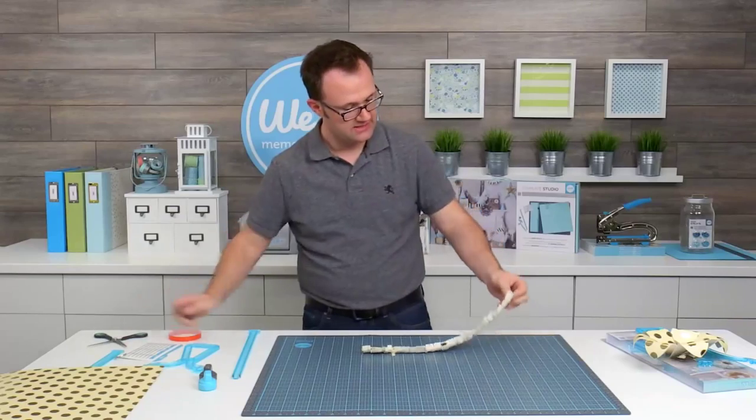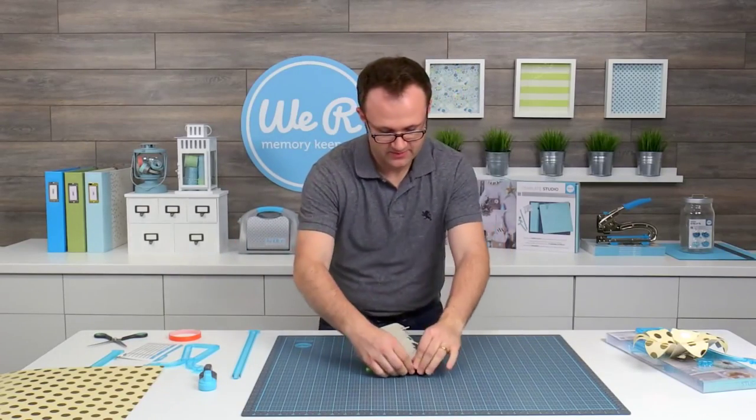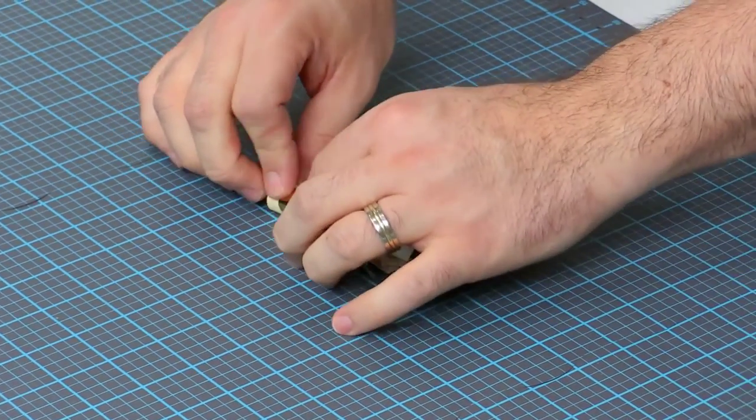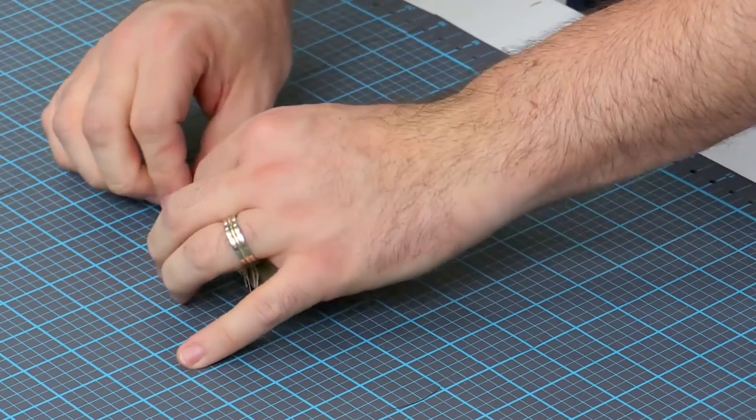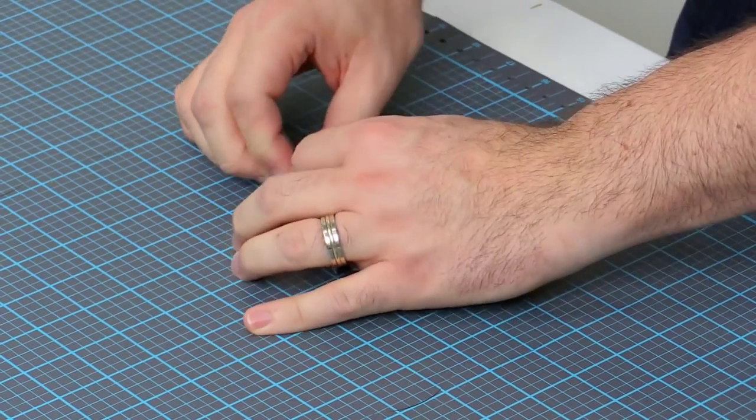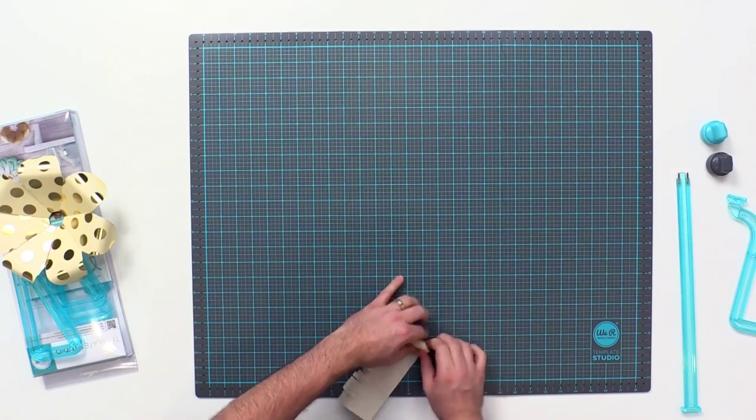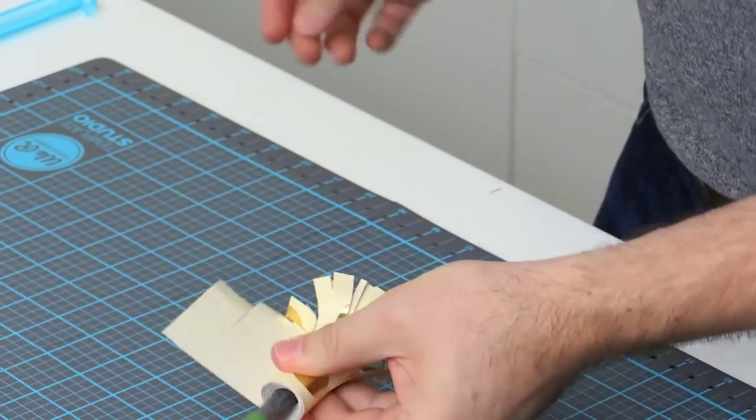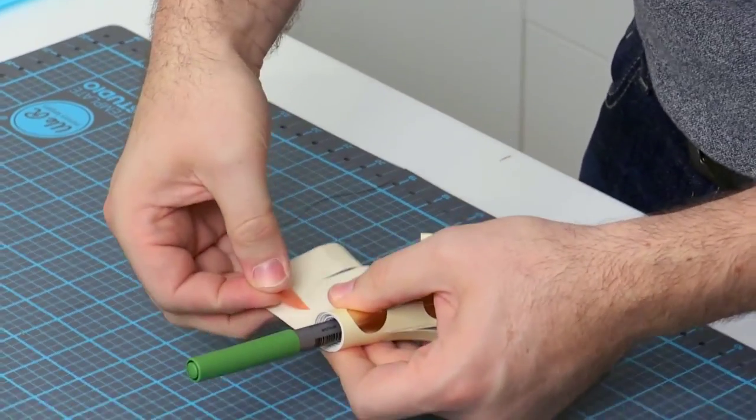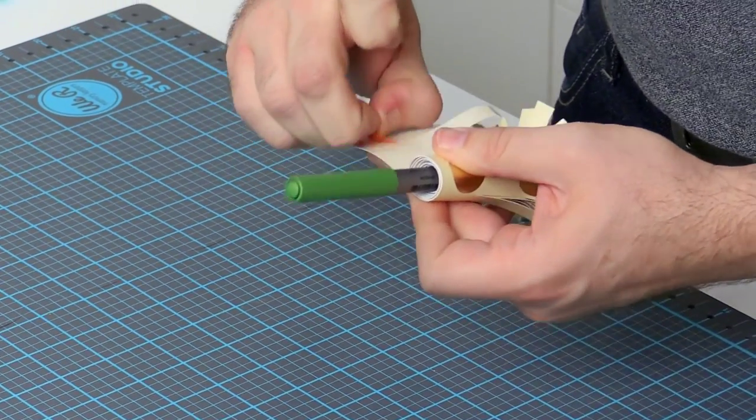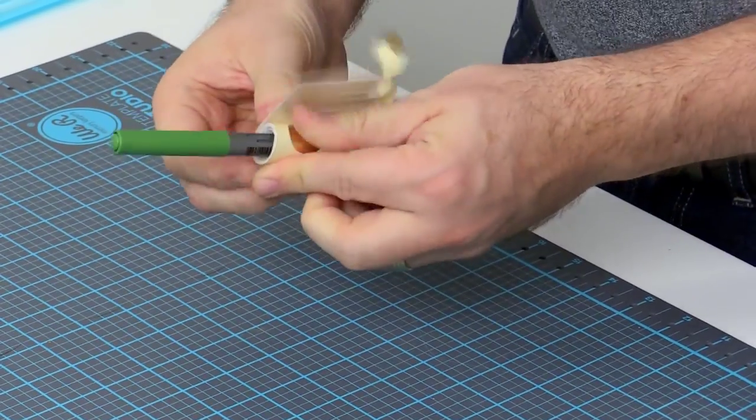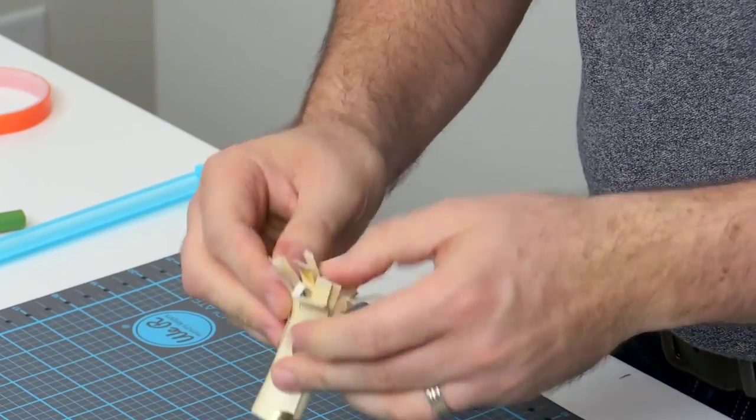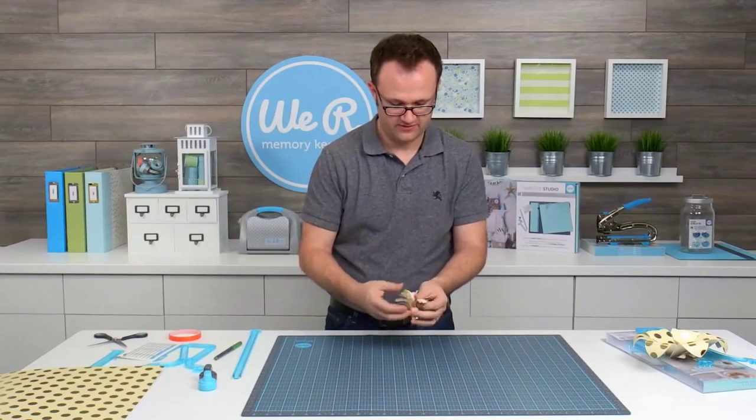I'm going to take my marker one more time, place it here in the center and now I'm going to roll it back on itself. Just rolling this around. It doesn't have to be super tight. When we get to the end, we're going to take one more piece of tape and place it in there just to secure it all together. Here we have our fringed center to our flower.